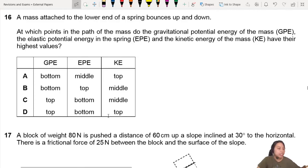Here we go into an energy question, question 16. A mass attached to the lower end of a spring bounces up and down. At which point in the path of the mass do the GPE, EPE, and KE have their highest values?